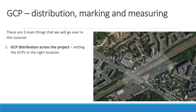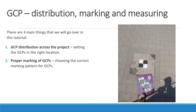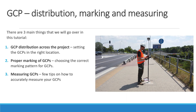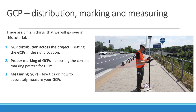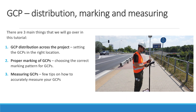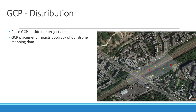There are three main things that we will go over in this tutorial. First, GCP distribution across the project — this means setting the GCPs in the right location. Second, proper marking of GCPs — it is important to choose the correct marking pattern. Third, measuring GCPs — a few tips on how to accurately measure your GCPs. Let's start with the first one.